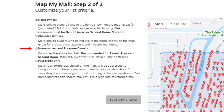The next option is Homeowners and Absentee Owners, which basically combines the first two lists. The final option is Properties Only, and this will generate a mailing list of every single property within the search area. This is a great way to saturate the entire neighborhood, including renters, vacation homes, and second-home markets. After you've made your selection, click the Save New Criteria button.